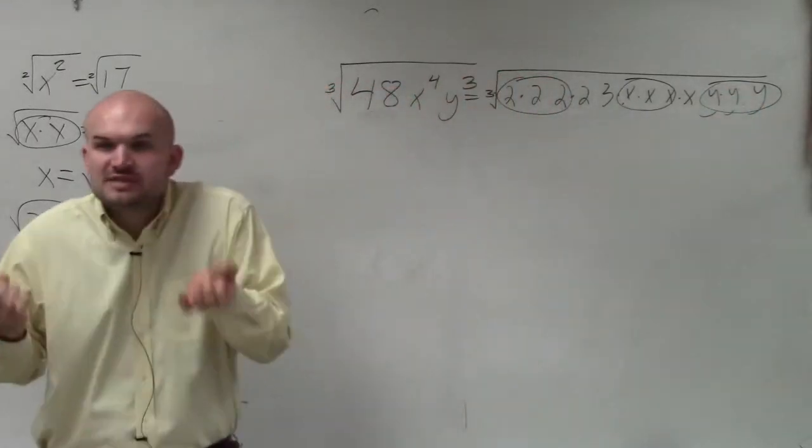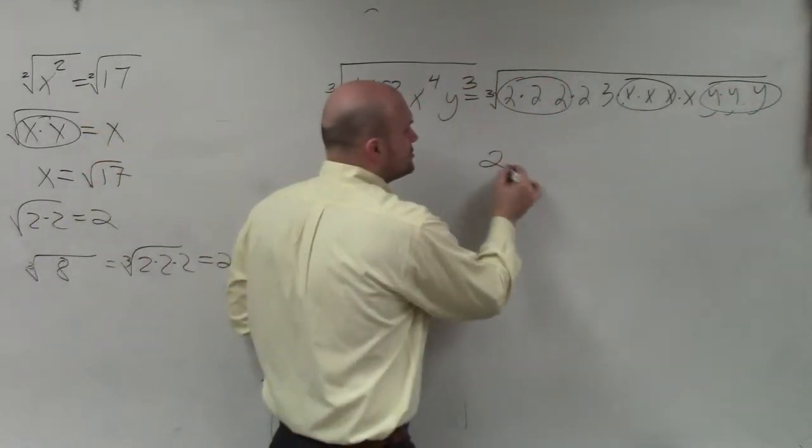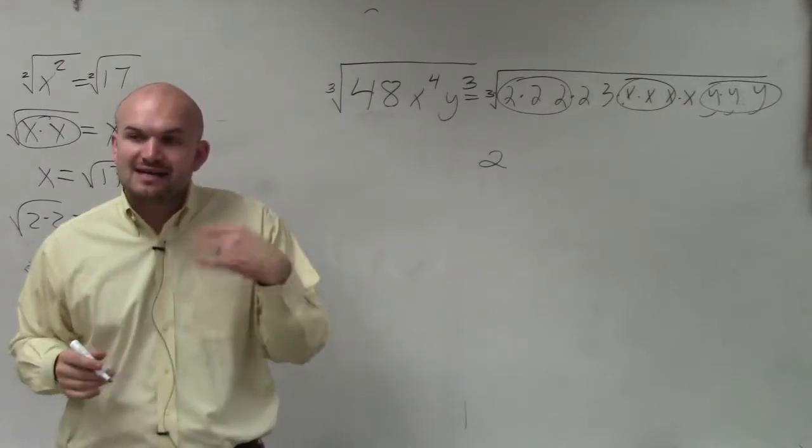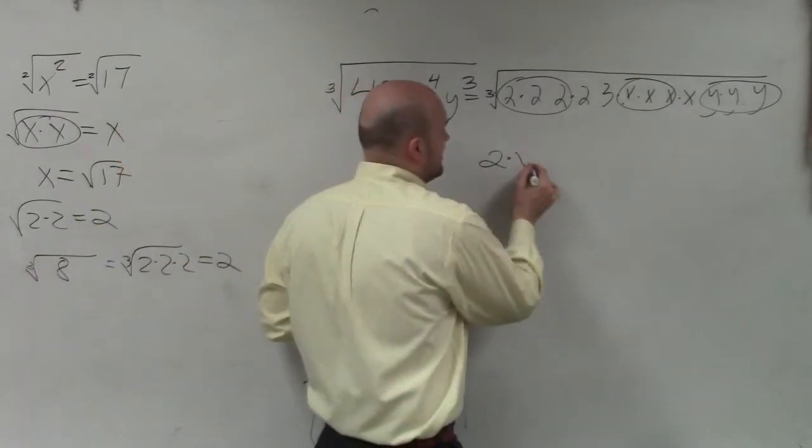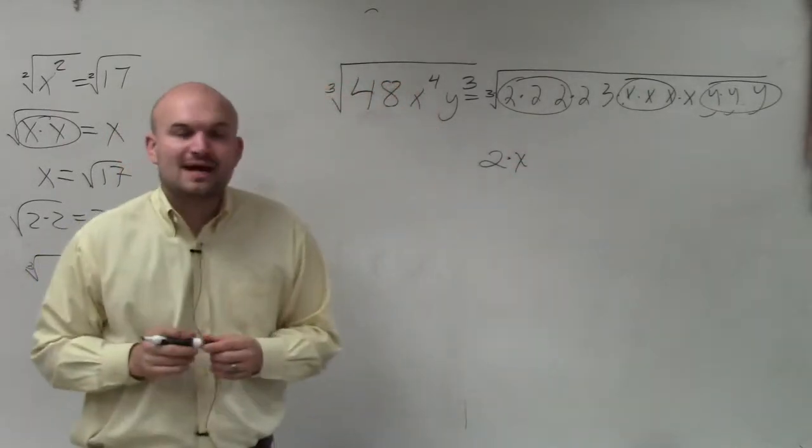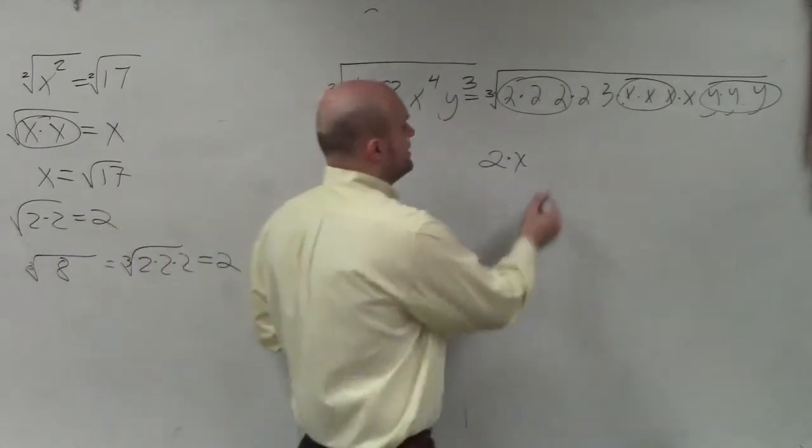So again, the cube root of two times two times two is just two. The cube root of x times x times x is just x. And the cube root of y times y times y is going to be y.